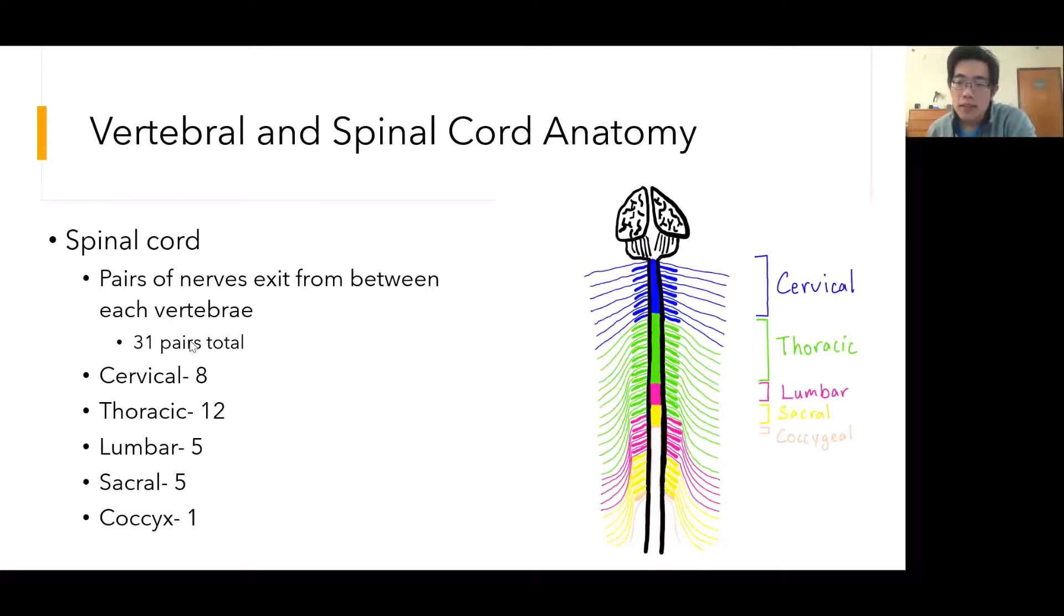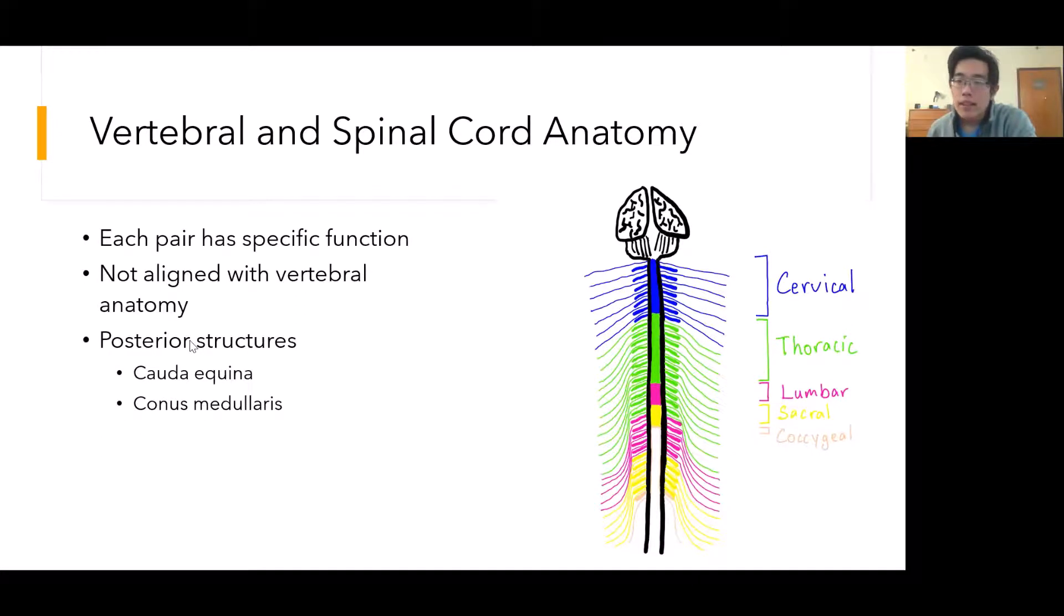This image now has the spinal cord filled in, as well as the spinal nerves. As you can see, the spinal nerves exit between each set of vertebrae. There are 31 pairs of these spinal nerves in total, and they're divided, just like the vertebrae, into cervical, thoracic, lumbar, sacral, and coccygeal regions. Each pair of nerves has a specific function, and we'll get into more detail on what each pair actually does in a future video.